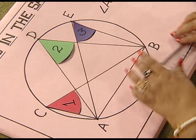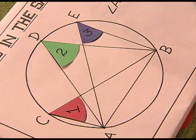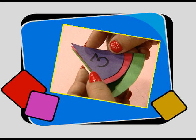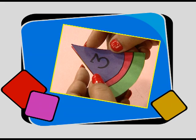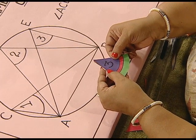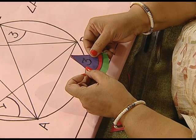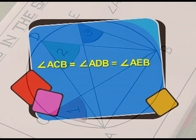Now we are supposed to verify that these angles are of equal measure. How do we do it? We just pick up these replicas and arrange them one above the other. Yes, what do you notice? We observe that all these angles have equal measure. That means angle ACB is equal to angle ADB is equal to angle AEB.